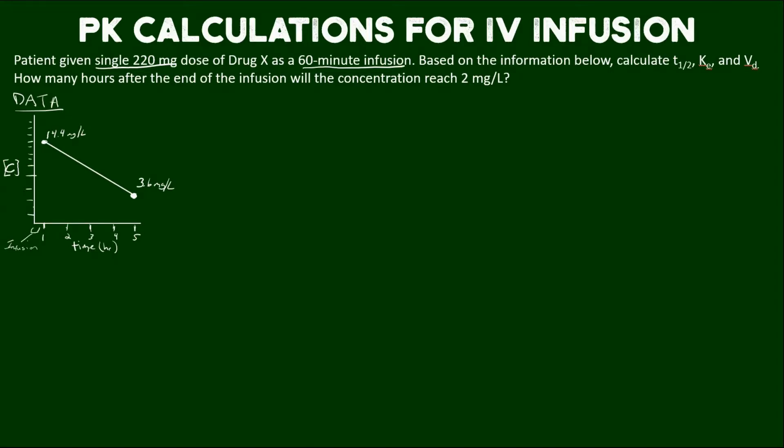How many hours after the end of the infusion will the concentration reach 2 mg per liter? Here's our data on the left — it's a graph. We can see the infusion from 0 to 1 hours. At the end of the infusion, the concentration measured was 14.4 mg per liter at 1 hour, and then a second concentration was taken at 5 hours: 3.6 mg per liter. So with this information, let's get to calculating.